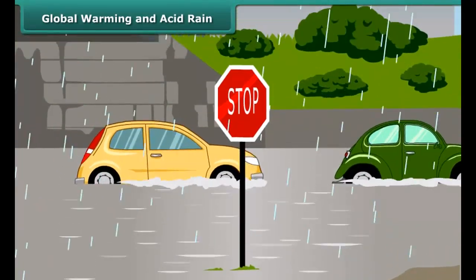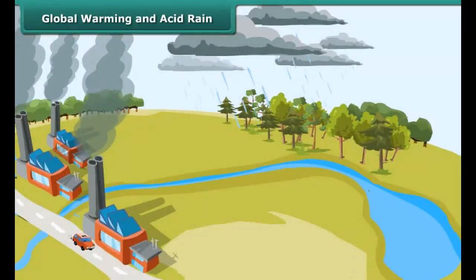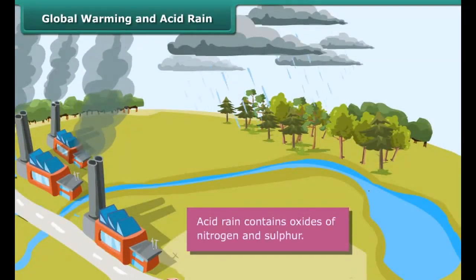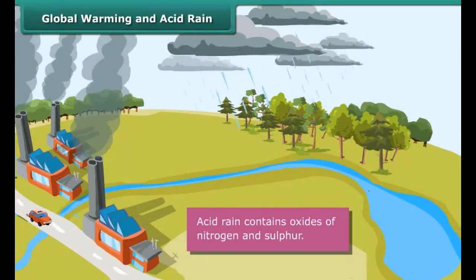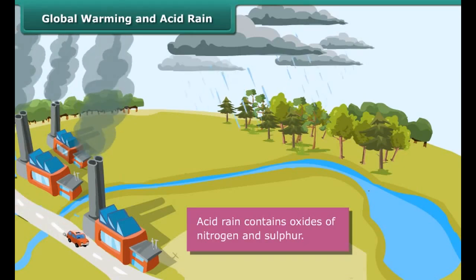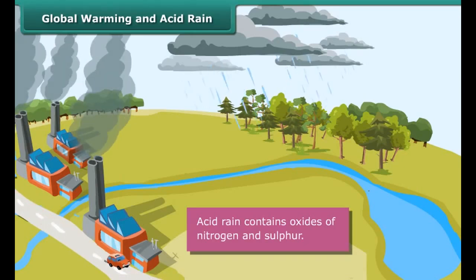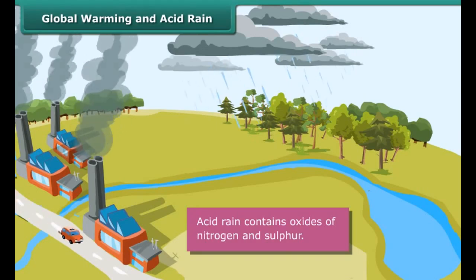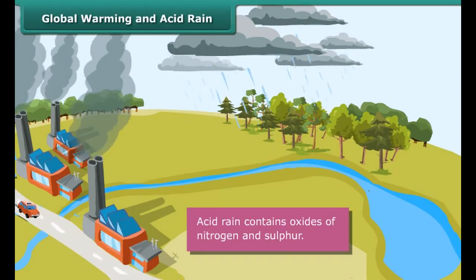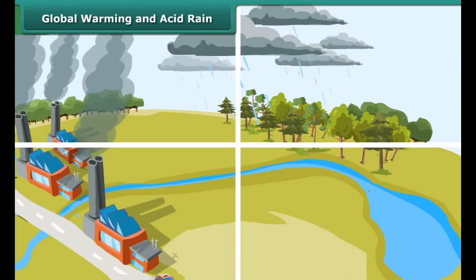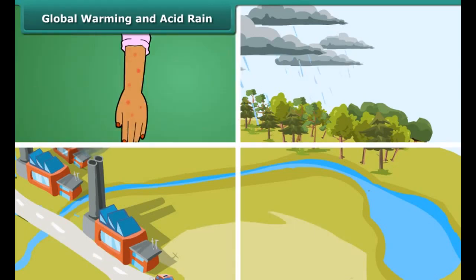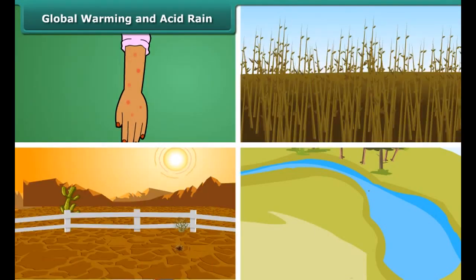There are ways we can reduce the negative impact on the environment by choosing the right fuel. A great example is cars, buses, and auto rickshaws that run on compressed natural gas or CNG instead of petrol. CNG is a much cleaner and cheaper fuel.